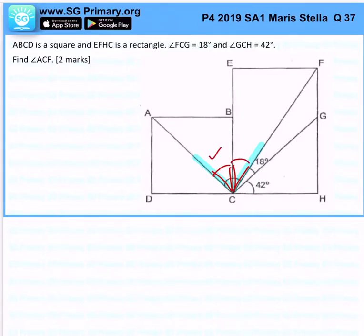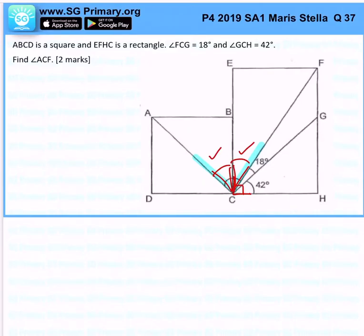Next, we can easily get this missing angle as well, because we know BCH is a right angle. So before solving, just look through and have some steps in mind of how you want to tackle this question. Let's dive right into it.